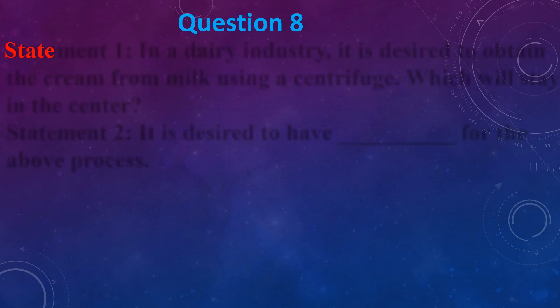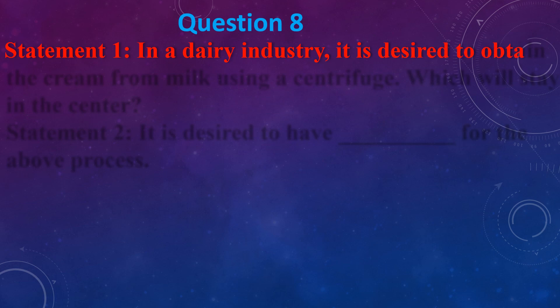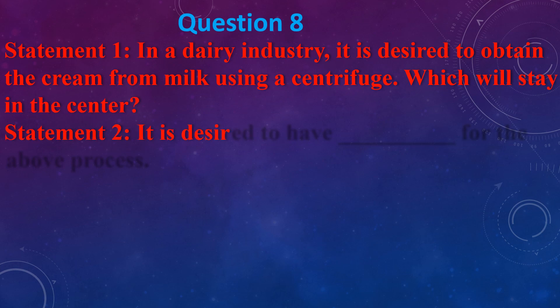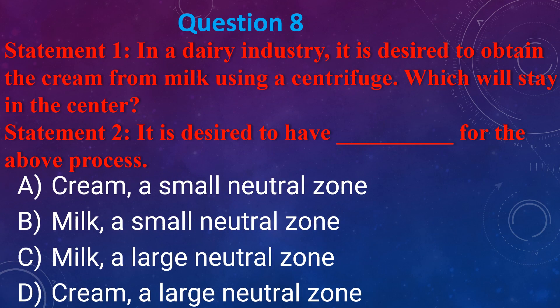Statement 1: In the dairy industry, it is desired to obtain cream from milk using a centrifuge, where cream will stay in the center. Statement 2: It is desired to have a small neutral zone for the above process. (a) Cream, small neutral zone (b) Milk, small neutral zone (c) Milk, large neutral zone (d) Cream, large neutral zone. The answer is (a) cream, small neutral zone.